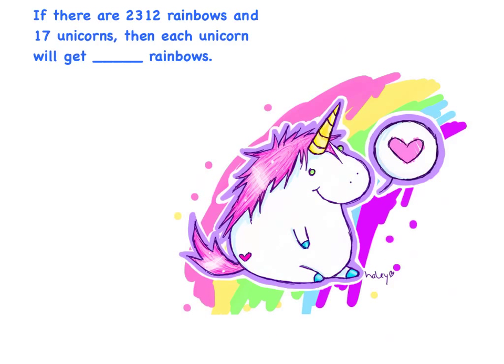So, if there are 2,312 rainbows and 17 unicorns, then each unicorn will get 136 rainbows.